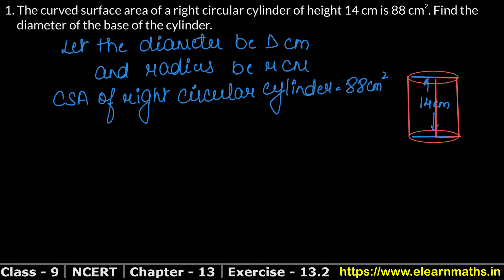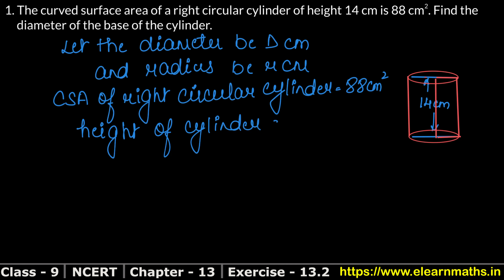We have to find the radius. The height of the cylinder is 14 cm. The formula for curved surface area is 2πrh. So, the curved surface area equals 88.